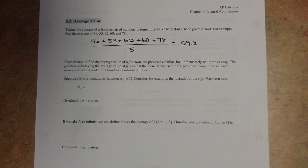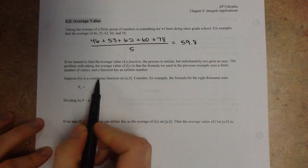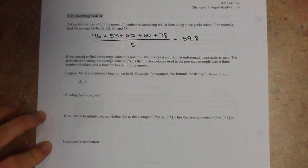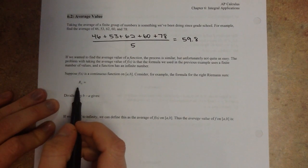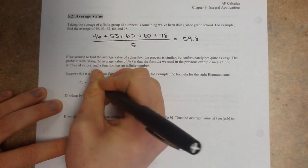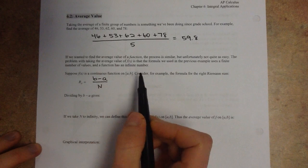What we're trying to find is the average value of a function. With a function you've got an infinite number of values and can't divide by infinity, so we're going to take it back to Riemann sums for a brief moment. Riemann sums are finite, whereas an actual integral is infinite. For a continuous function on a closed interval [a, b], the right Riemann sum formula has n intervals, each of width (b minus a) divided by n.